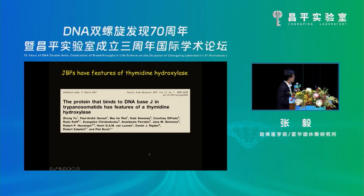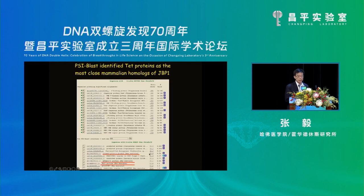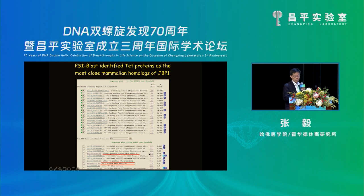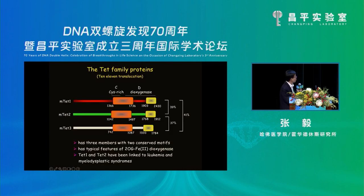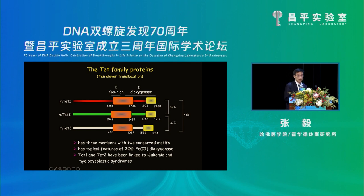Then a paper came out showing that the base J binding protein has features of thymine hydroxylase, and that's what gave me renewed interest. Using the base J binding protein in BLAST, most hits were fungi or parasite proteins, but far out there were a few unknown proteins with a little bit of homology — and importantly, this homology was all in the dioxygenase domain. That's exactly the kind of chemistry we hypothesized: using dioxygen and alpha-ketoglutarate and iron as cofactors. So we did not ignore this.